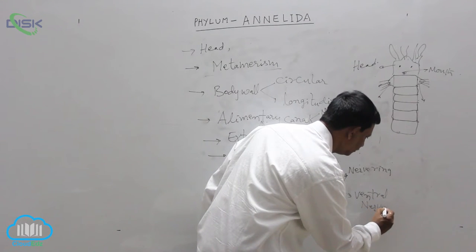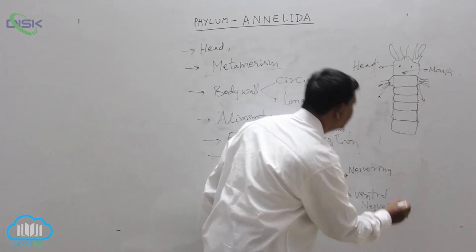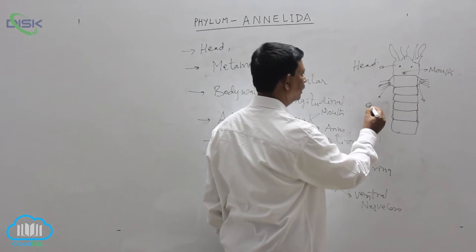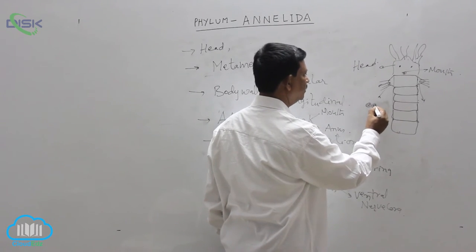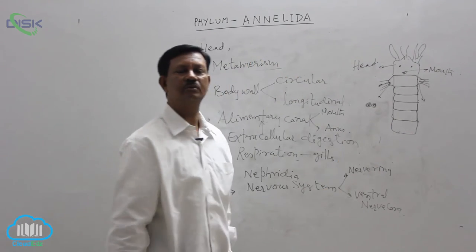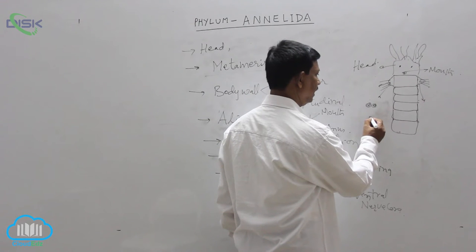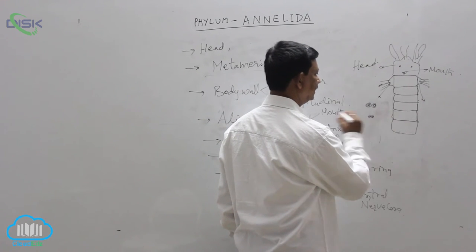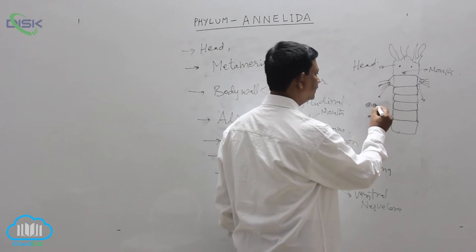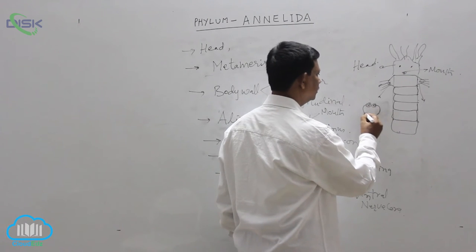Ventral nerve cord. For example, at the anterior region above the esophagus, one pair of ganglia are present known as the suprapharyngeal ganglia. Below the pharynx, subesophageal ganglia is present. These two are connected with each other and form into nerve ring.